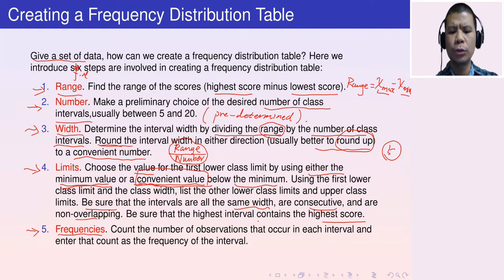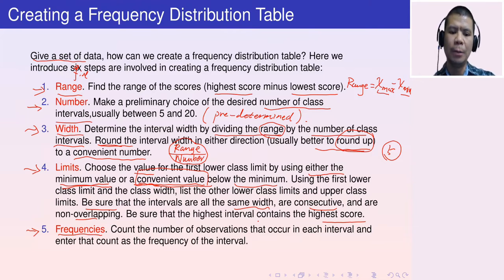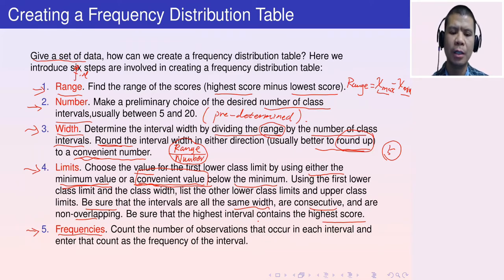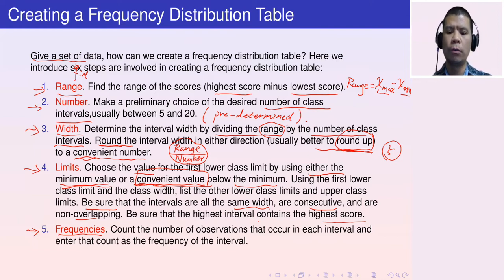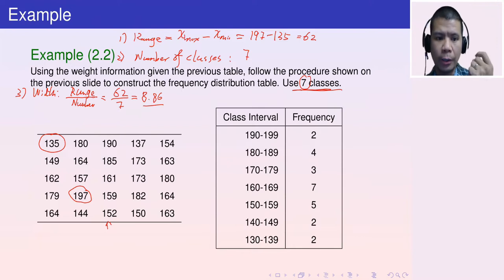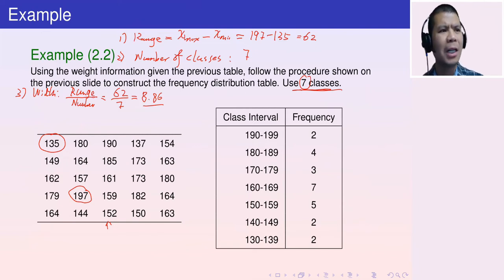We round this ratio up to a convenient number — one that is easy to calculate and remember, like multiples of 5 or 10, and also close to the ratio. For 8.86, rounding up to 9 is possible, but I would prefer to use 10.